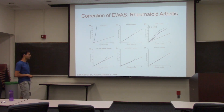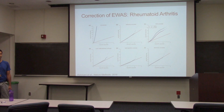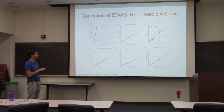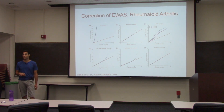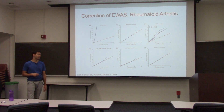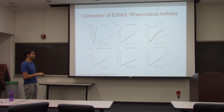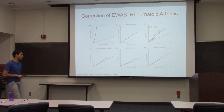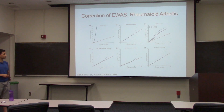For a second validation, we went back to the EWAS on RA example. Before, we saw a large inflation in the statistic. When we apply ReFACTor — adding the ReFACTor PCs as covariates to the linear model — we get a result very similar to the reference-based method. In fact, we get the exact same three significant associations, whereas other unsupervised approaches give slightly different results.